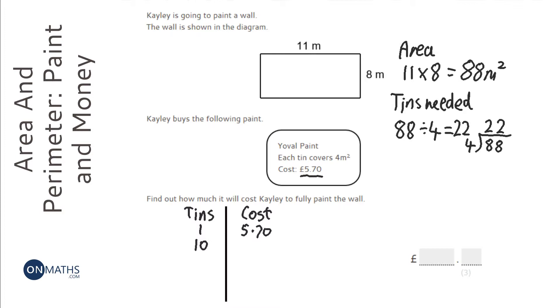And so, I need to get 22. So, if I get 10 tins, that will be 10 times as much. So, that will be £57. If I get 20 tins, that's going to be twice as big as £57. So, it's going to be £114.